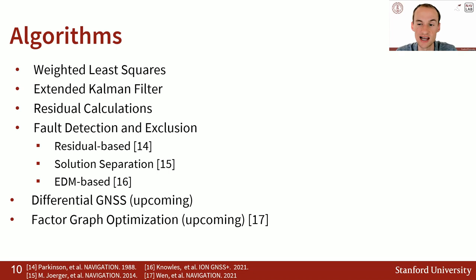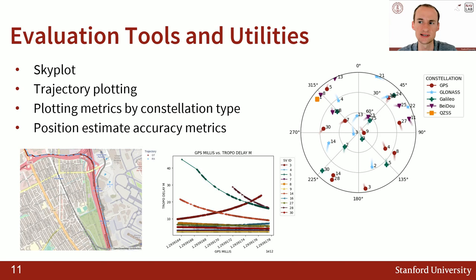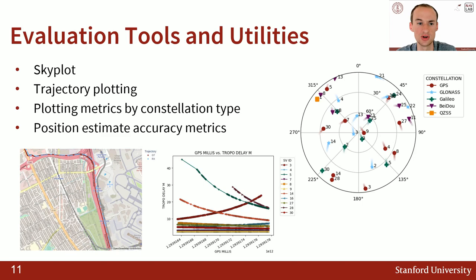Once you have your data in the NavData Python class, you can then make use of all the algorithms and functionality of our Python library, including positioning algorithms like weighted least squares and extended Kalman filters, fault detection methods, as well as the soon-to-be-added DGNSS and factor graph optimization. Additionally, we have a number of evaluation and visualization tools — you can plot trajectories on maps, visualize rows of data sources broken out by constellation, and we have sky plotting functionality so you can see where the satellites were located during the data collection period.